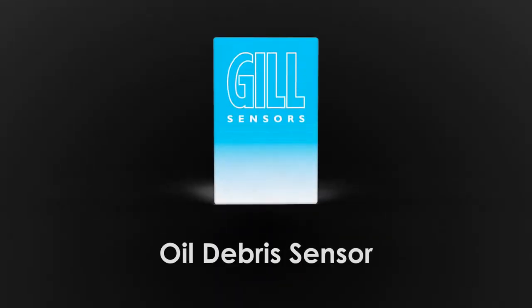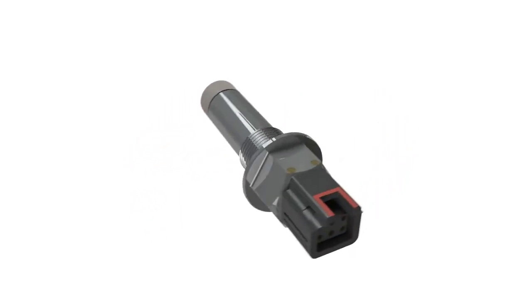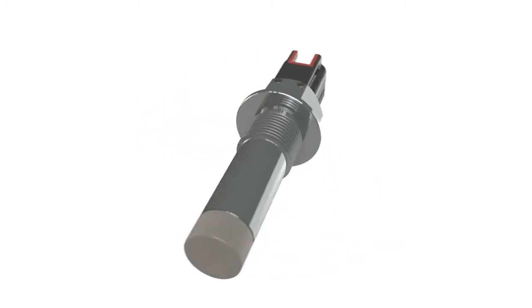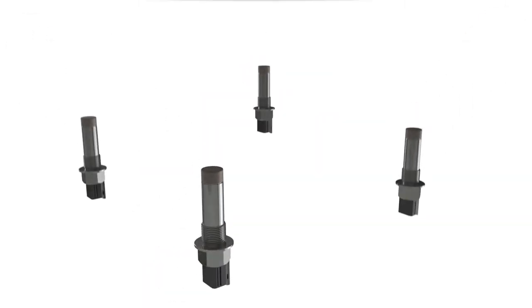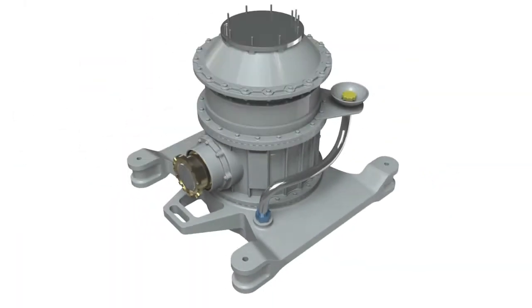The Gill Sensors Oil Debrisensor. A solid state sensor with no moving parts, designed to monitor the accumulation of metallic debris in oil systems. Sensors are typically installed in multiple locations within the lower part of an oil system.